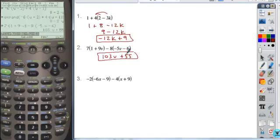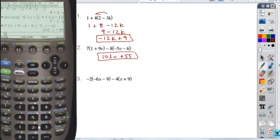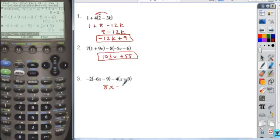All right. And then, finally, the last example, again, if I enter it, negative 2 times the quantity negative 6x minus 9, close the parentheses, minus 4 times the quantity x plus 9. Again, if you're entering these, just make sure that you have everything entered properly. Here, I get my expression 8x minus 18. It's written in the order that I want it to be, and so these would be my solutions.